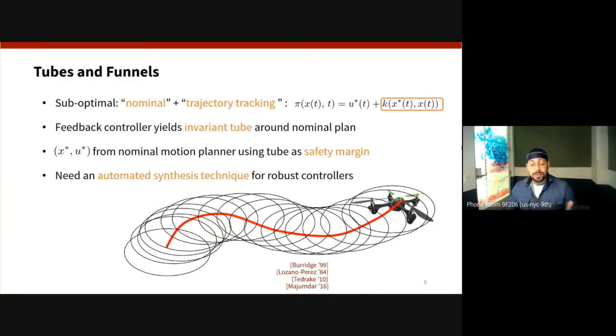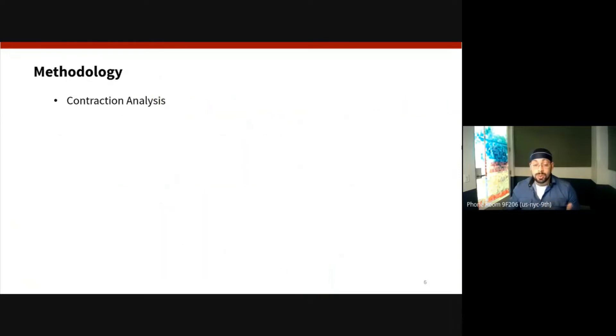Now this notion of using tubes and funnels for motion planning is definitely not unique, but what we're looking for is an automated synthesis method that can compute these feedback controllers and optimize the size of these invariant tube bounds. And we want to do this in this case using contraction techniques.